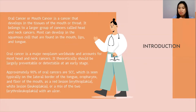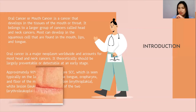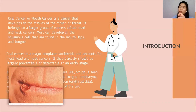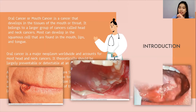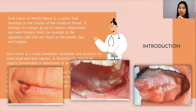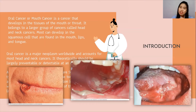Oral cancer is a major neoplasm worldwide and accounts for most head and neck cancers. It is theoretically largely preventable or detectable at an early stage. Here are example photos of lip cancer and mouth cancer, which shows white patches present, also present on the tongue. This type of cancer can be life-threatening if not diagnosed and treated early, and early detection is the key to surviving oral cancer.